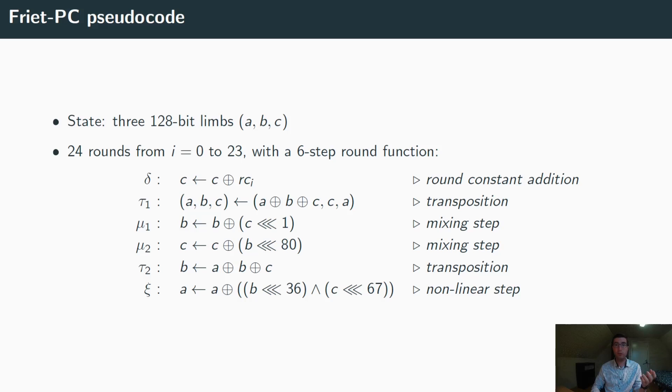The underlying cryptographic permutation FRIT PC has a state that can be divided into three 128-bit limbs ABC. It contains 24 rounds, each of them divided into six steps. The first step of the round is delta. It consists in adding a round constant to limb C. The round also contains two transpositions, tau 1 and tau 2, where one of the limb is replaced by the sum of the limbs, combined in the case of tau 1 with some limb permutation. These operations help achieving faster diffusion by mixing the bits between the limbs. The round function also contains two mixing steps, mu 1 and mu 2, where the circular shift of one limb by some offset is added to another limb. This operation also helps achieving diffusion by mixing bits between the limbs, this time at different positions.